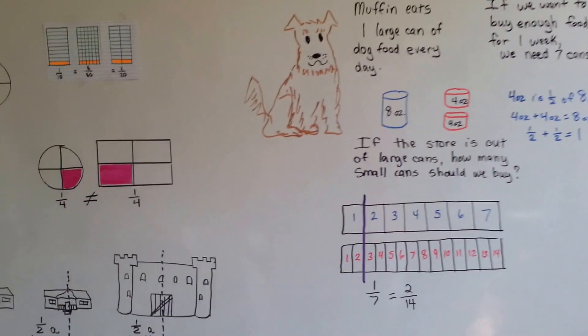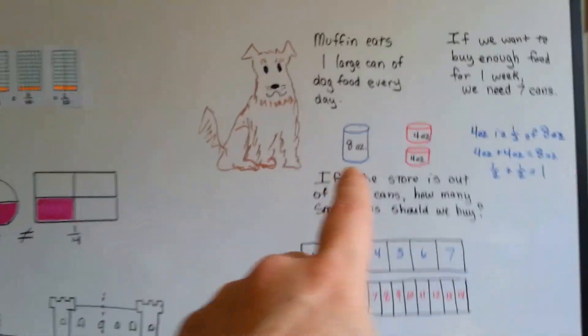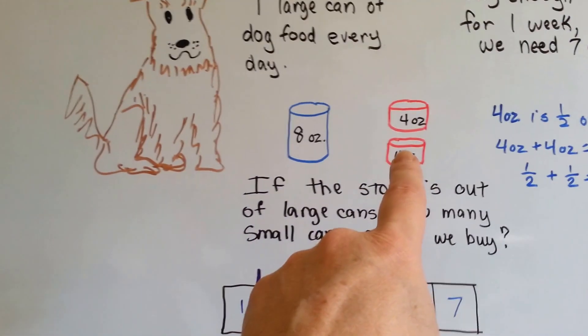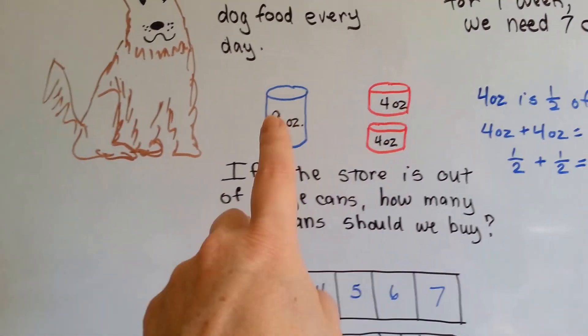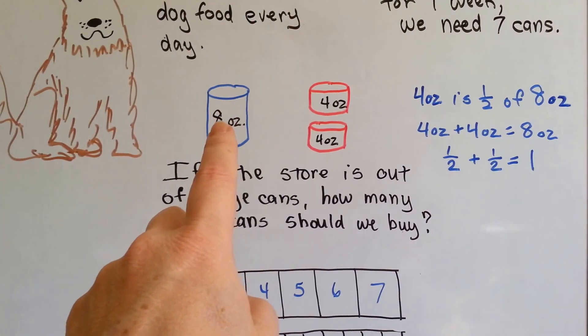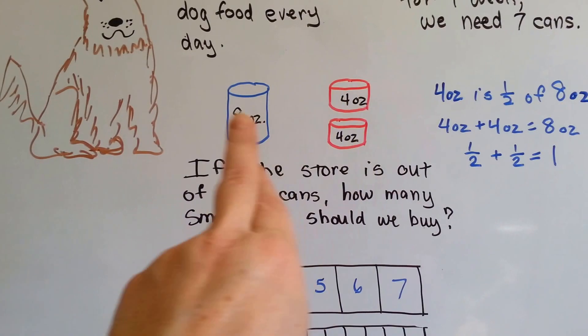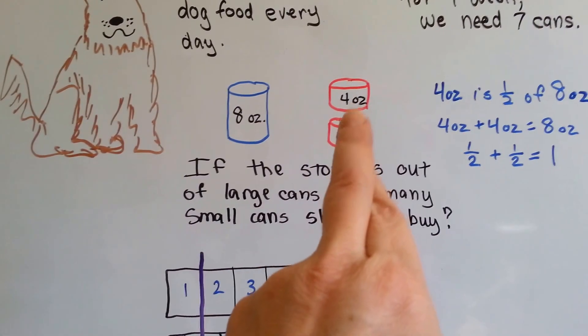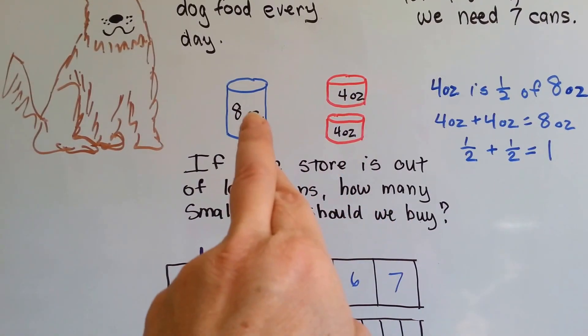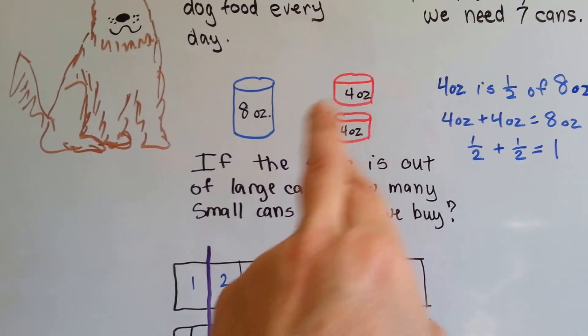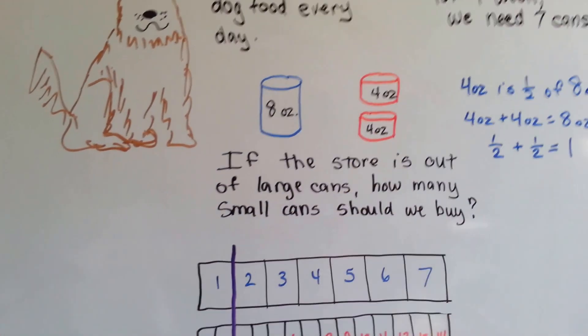You got to make sure that they're equal to the same thing. What if these small cans were only two ounces or three ounces? Then two of them wouldn't equal a big can, would they? What if they were six ounces? Nope. They wouldn't equal. Two of them wouldn't equal a big can. The important thing is that four and four is equal to eight, so that means each of these is half of one of those. That's why it works.